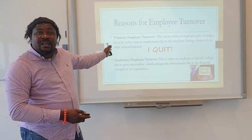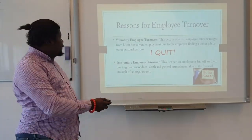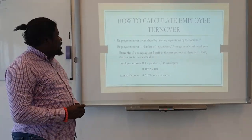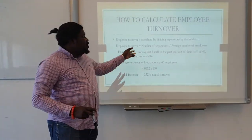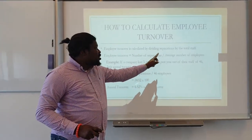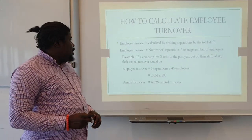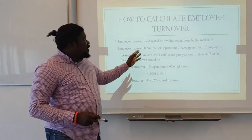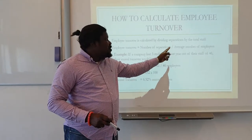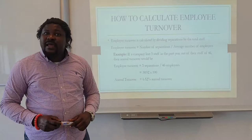Now that we understand the two reasons for turnover — voluntary and involuntary — how do we calculate employee turnover? Employee turnover is calculated by dividing separations by total staff. The formula is: Employee Turnover = Number of Separations ÷ Average Number of Employees × 100. Employee turnover is usually expressed as a percentage.